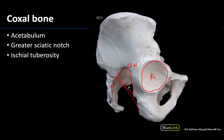The ischial tuberosity is located inferior to the acetabulum on the ischial portion of the coxal bone. It is a notable mounding of bone caused by the proximal attachment of the hamstring muscles.